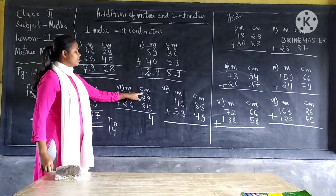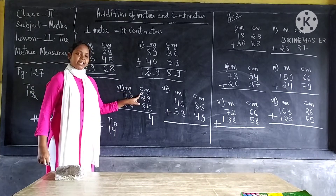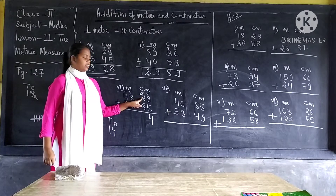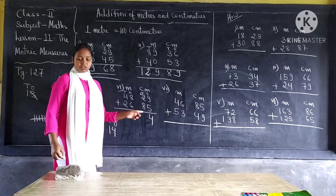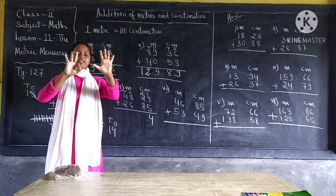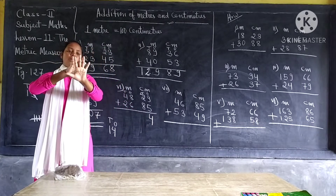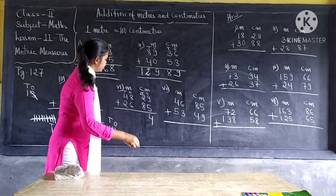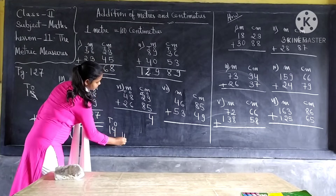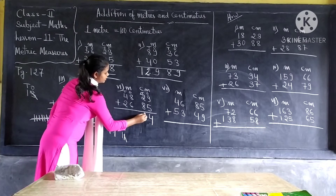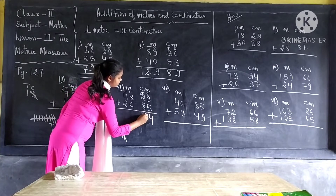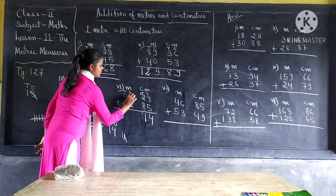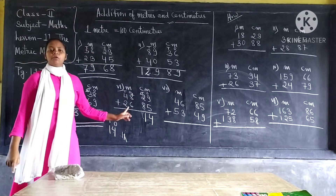Under tens of centimeters, we have one ten plus two tens plus eight tens. One plus two equal to three, and three plus eight equal to eleven. We cannot write eleven there. This eleven: the one will go to meter and the one remains. So it will go to the meter column.